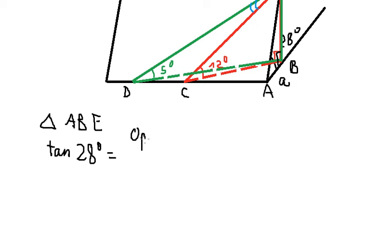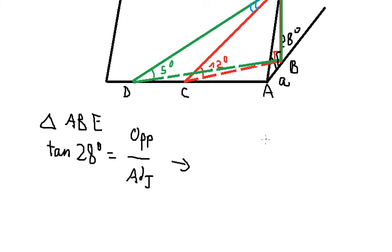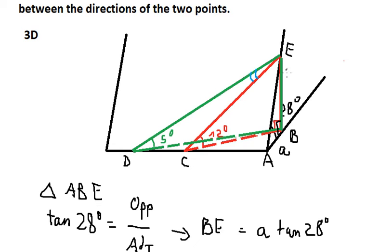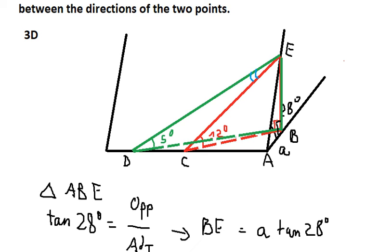So we can use tangent here. Tan(28°) equals opposite divided by adjacent. The opposite side is BE, and we want to find BE. So we rearrange — multiply tan(28°) across — to find BE. Now let's consider triangle EBC. We can see that we have a right angle at B.